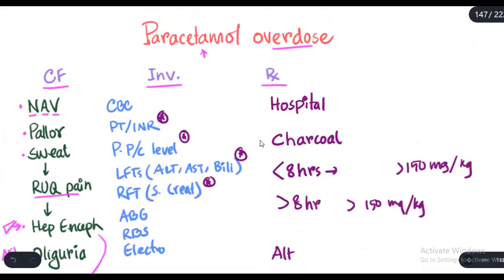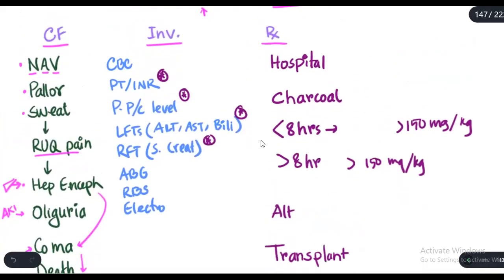What are the investigation findings? In the investigations, the most important ones are PT/INR, paracetamol level, basic liver function tests especially ALT, renal function tests especially serum creatinine, and an ABG. These are important because they guide therapy.